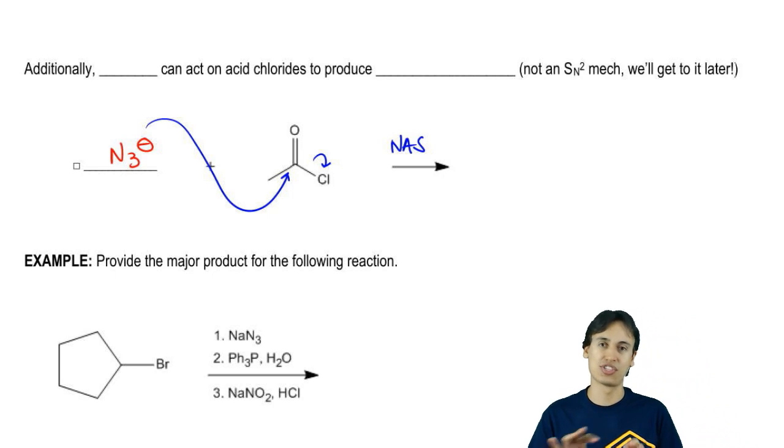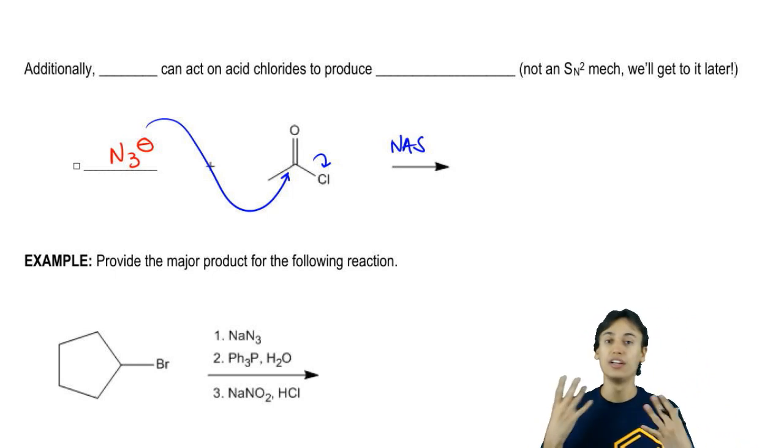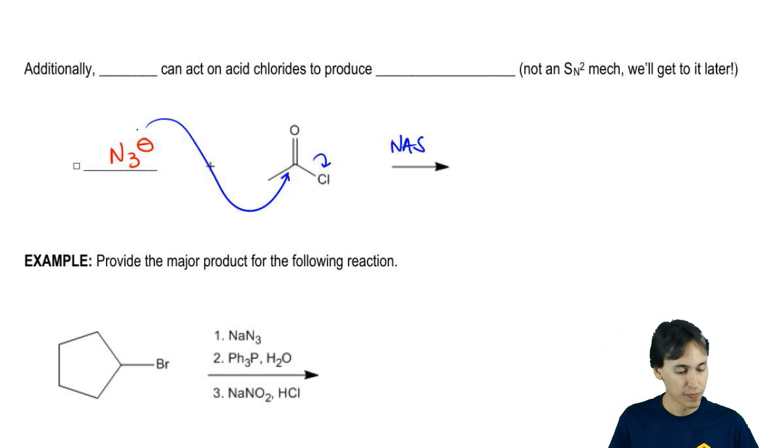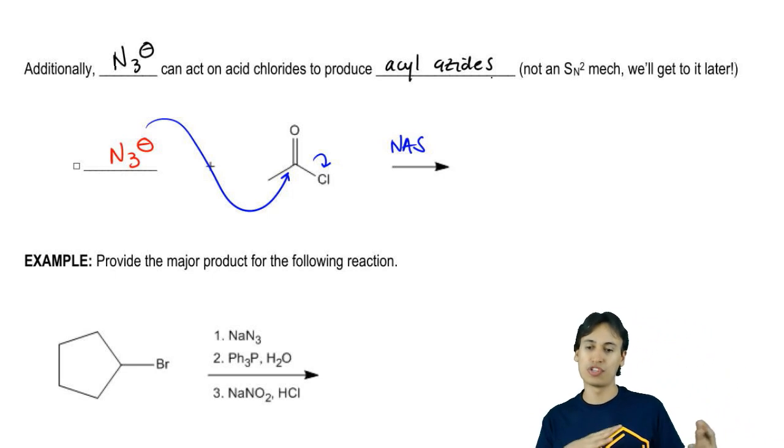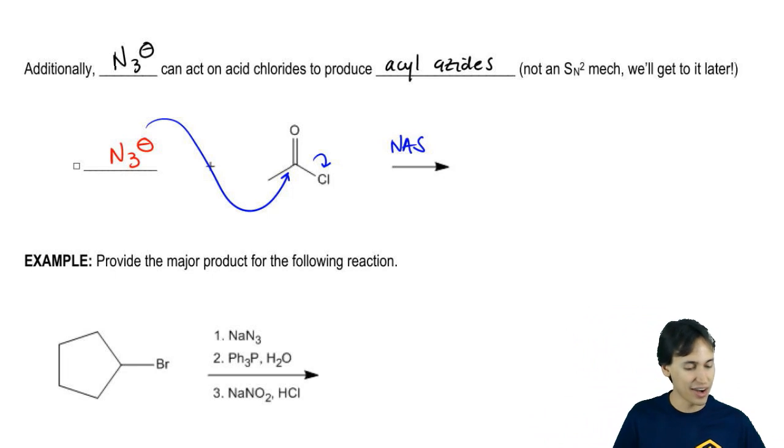That one you can look up on your own. You can type in nucleophilic acyl substitution into the clutch search bar and you'll find a whole video on that. What we find – so I have here N3 negative can act on acid chloride to produce acyl azides. Like I said, it's not an SN2 mechanism, but we talked about it in another video. It's an NAS mechanism.